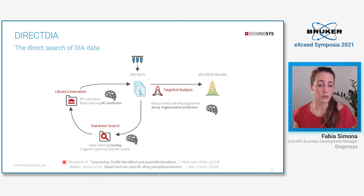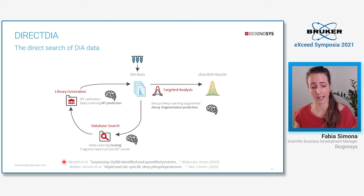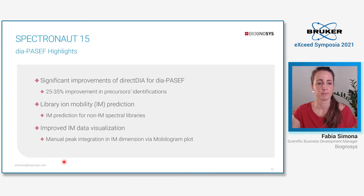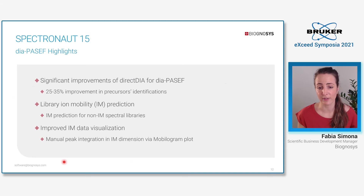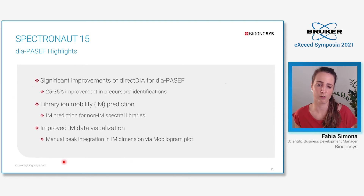I'm referring to two publications that showcase the high performance of direct DIA in both proteomics as well as site-specific phosphoproteomics. So what is new in Spectronaut 15 in regards to DIA-PASEF? I want to highlight three major features. The first one is significant improvements of the direct DIA workflow for DIA-PASEF, with a substantial increase in identifications.